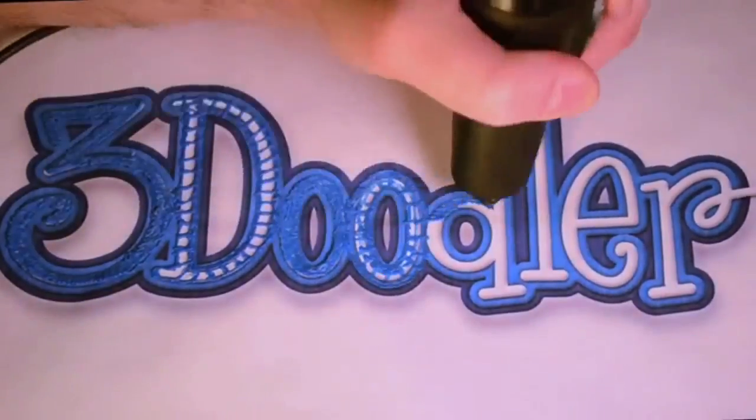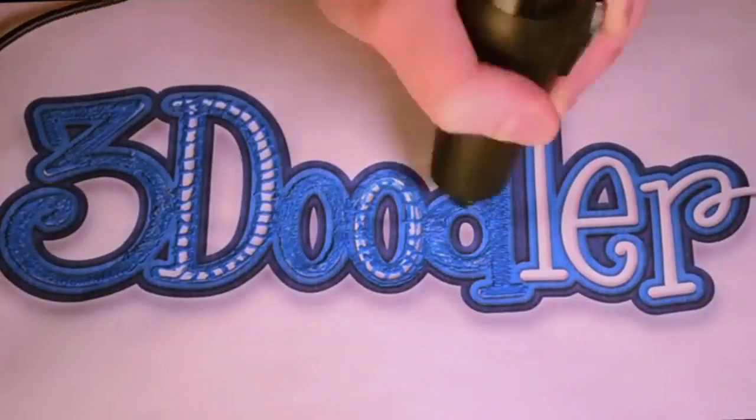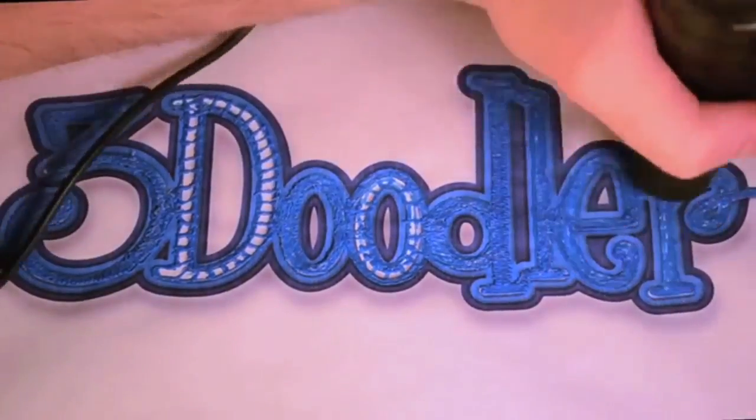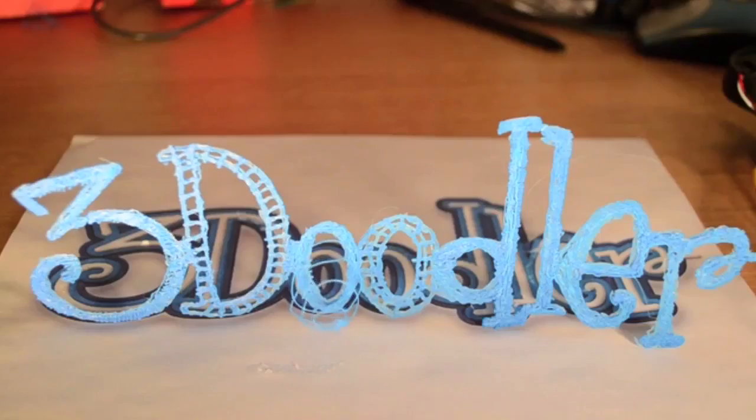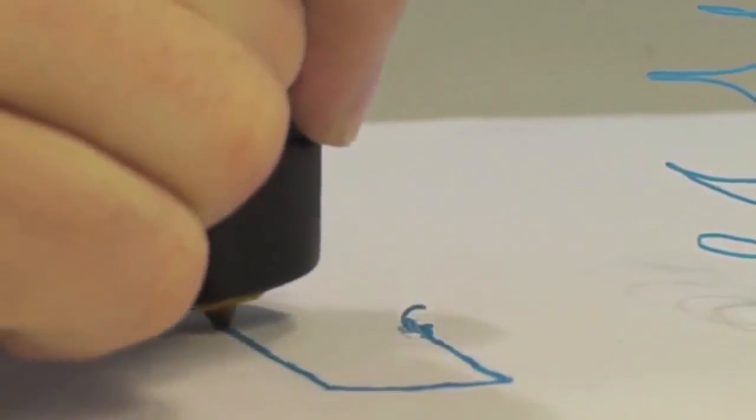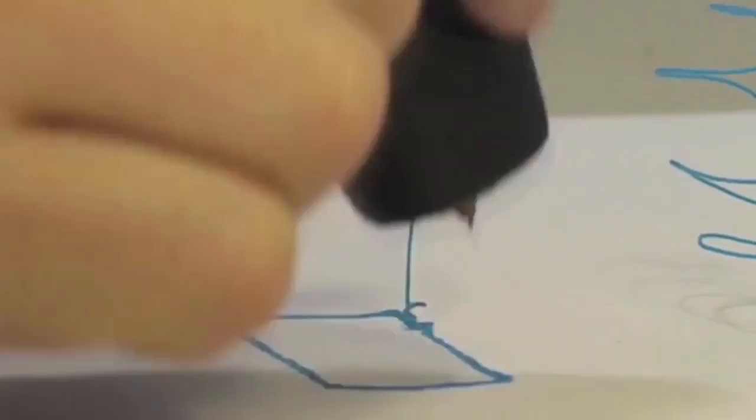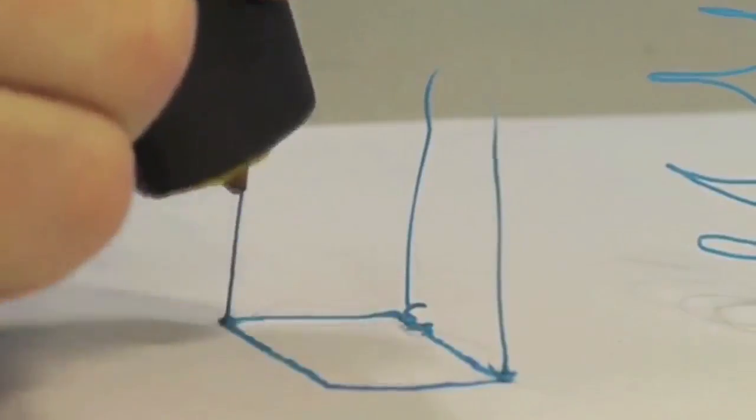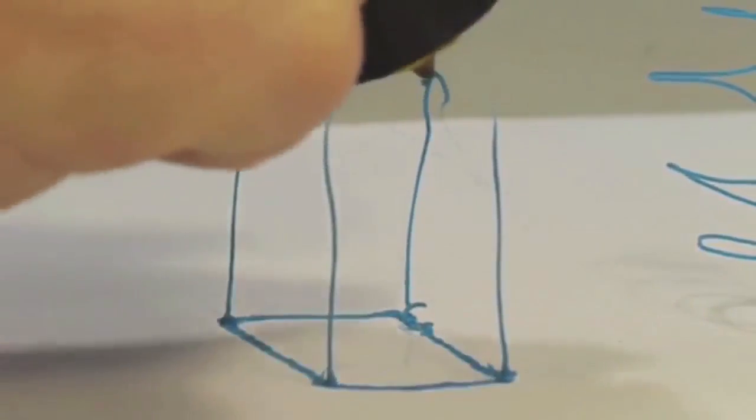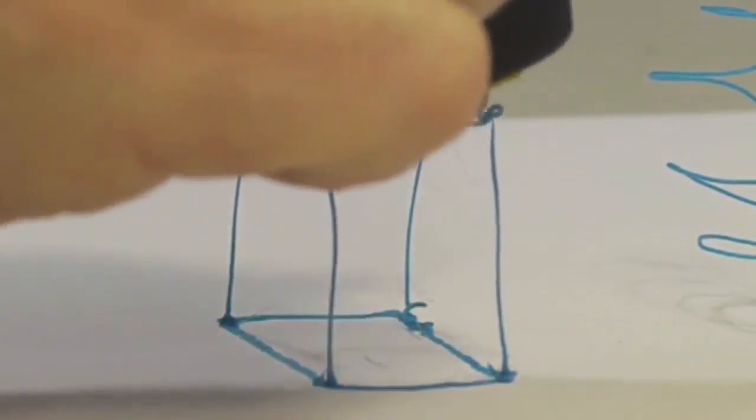What if you could draw things exactly as you imagined them? What if you could lift your pen off the paper and create real objects? The 3Doodler is the world's first and only 3D drawing pen. It's been designed to be compact and easy to use. No software, no computers. You just plug it in and can start drawing anything within minutes.